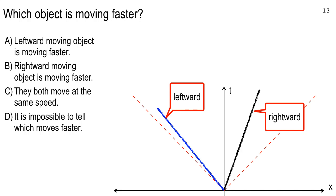The correct answer: the object going leftward — the blue line — is faster because it's closer to the photon line. The thing to the left is tilted almost all the way down to maximum speed of light. The black one over here, moving to the right, is almost straight up and down — closer to the stationary observer's position on this graph, which is the time axis.